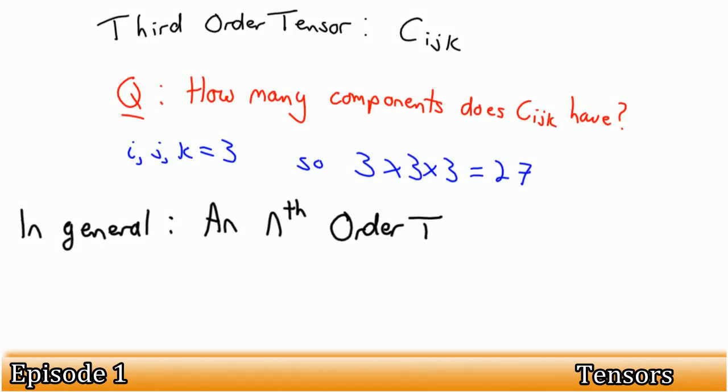So in general, for an nth order tensor, we have 3 times 3 times 3, and so on, n times over, or 3 to the n components.